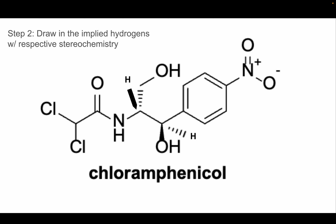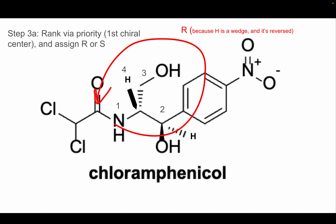So the next step is to draw the implied hydrogens with their respective stereochemistry. We identified this carbon and this carbon as chiral centers. This alcohol here is dashed, so that means the hydrogen needs to be wedged to follow VSEPR theory. Same with this one — this OH group is a wedge, so we need to draw a dashed hydrogen for the implied hydrogen. You do this just to help visualize assigning RNS, and you'll see why in a second.